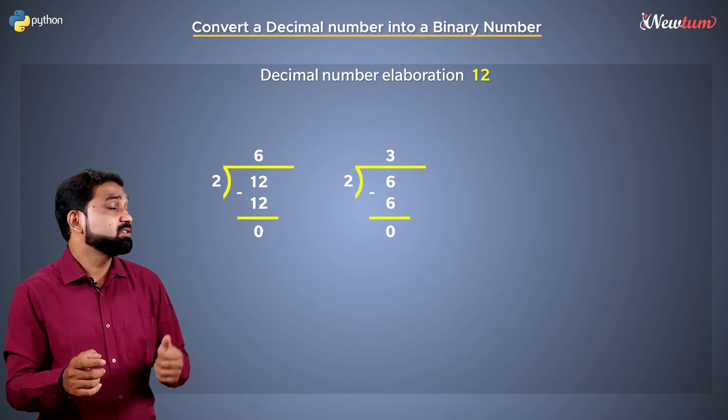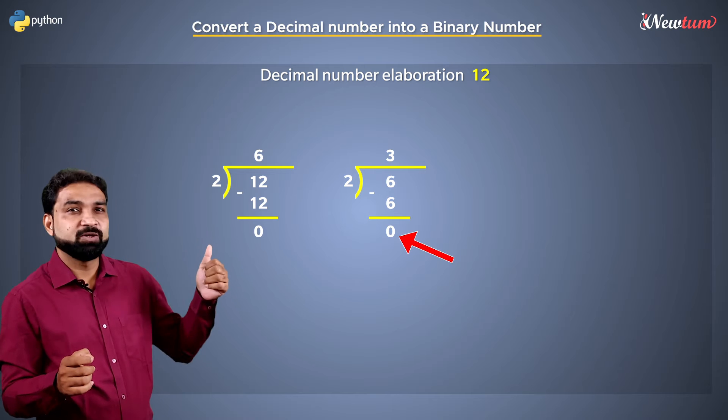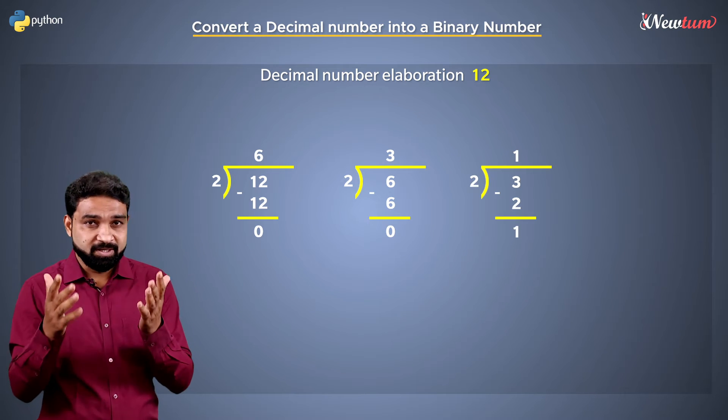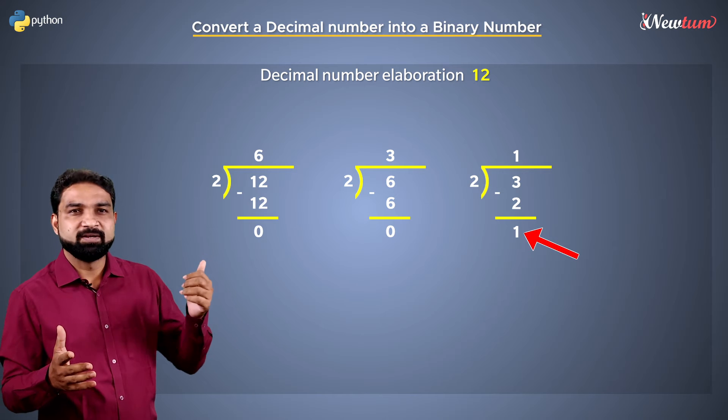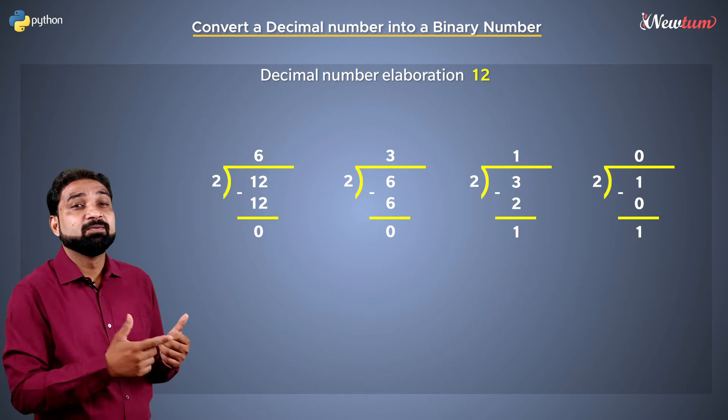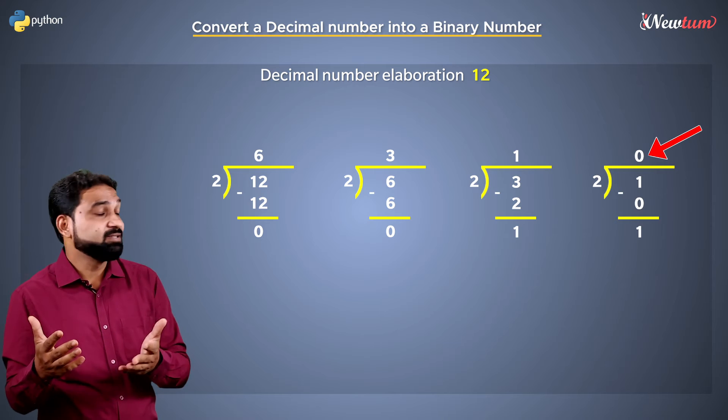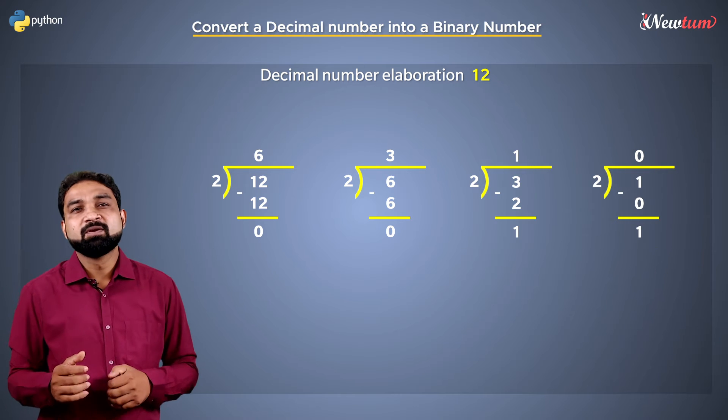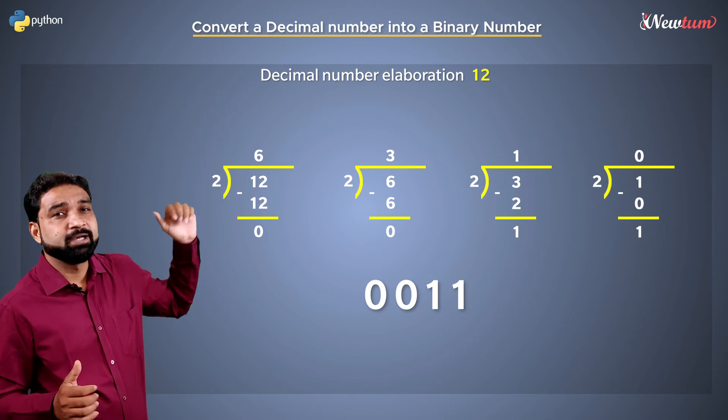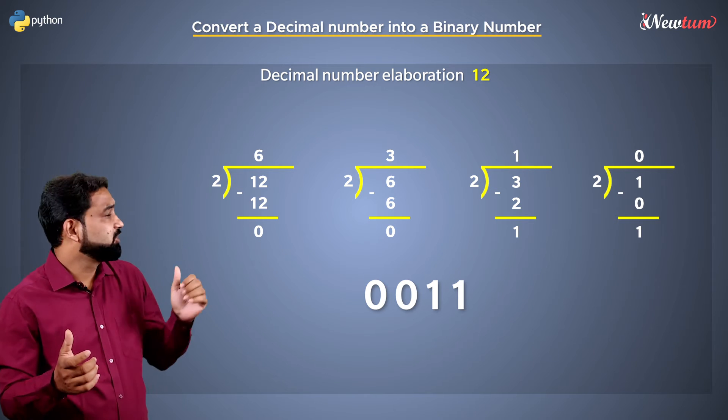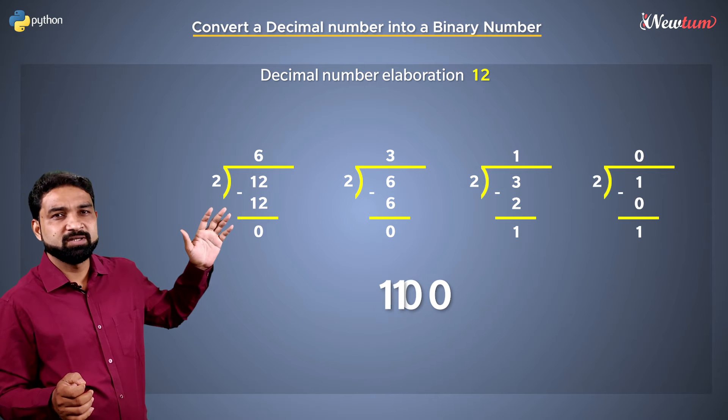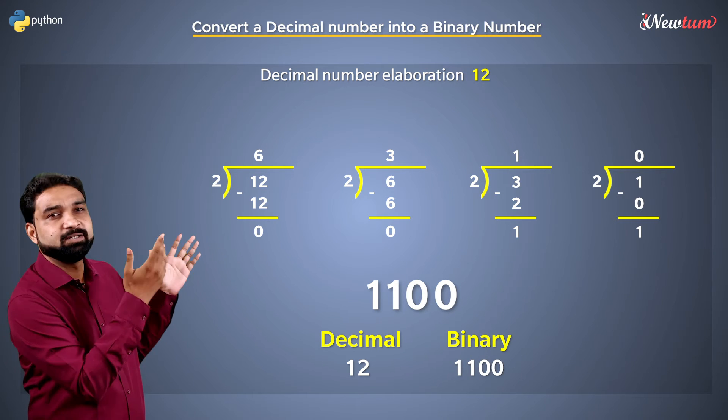When you divide 6 by 2, we get the remainder as 0 and the quotient as 3. With 3, you get the remainder as 1 and the quotient as 1. And with 1, we get the quotient as 0 and the remainder as 1. Well, this remainder output is nothing but our binary number represented in 0 and 1. So if you put this remainder in reverse order, it is our binary number.